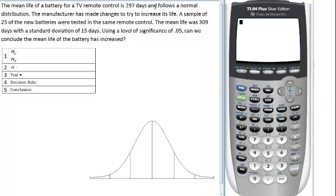What I like to do when I start one of these problems is list out what I know about the population and what I know about the sample. So let's start with the population. What do we know about the population? The mean life of a battery for a TV remote control, there it is right there, mu, is 297 days. And then follows a normal distribution. We're not given the standard deviation, so let's write that down. Standard deviation unknown. And that's going to be important to how we select our test statistic.